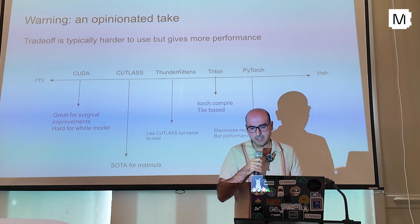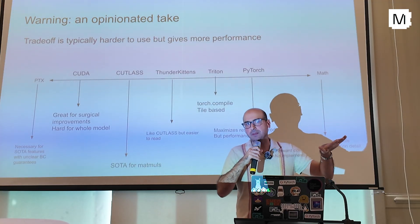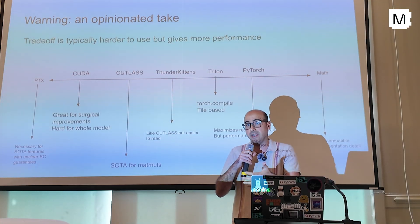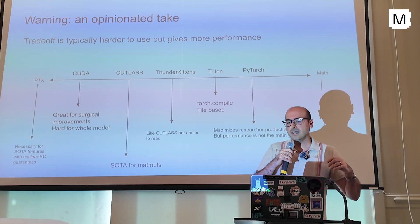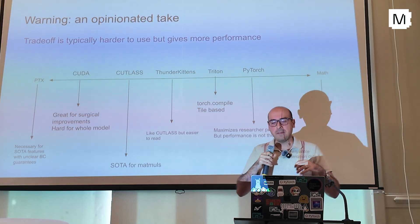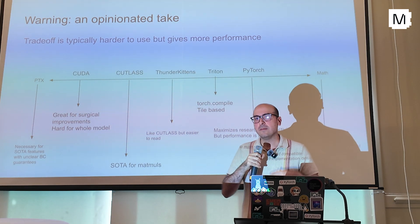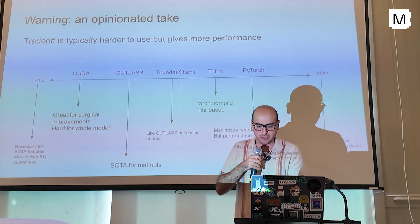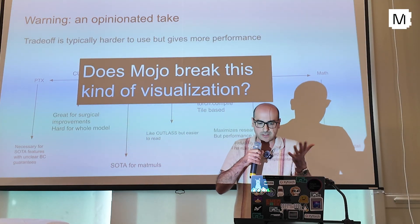I have an opinionated take: if you look at the spectrum of tooling, on one extreme you have math — no implementation detail, always backwards and forward compatible. PyTorch is kind of close to this; the goal is to maximize user productivity. Performance is a goal because we run on GPUs, but it's not the primary goal. Triton and compilers go a bit lower. ThunderKittens is like Cutlass but easier to read. Cutlass is very fast for matmul. And at CUDA or PTX level, these technologies become useful for surgical improvements but not for writing your whole model. The trade-off has been: the less usable your programming language, the faster it is. I'm fairly optimistic about Mojo being able to break this chart.